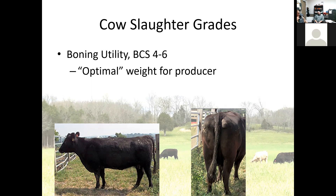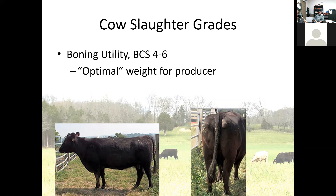This is where most cattle fall. These cattle used to have a slight discount to breaking cattle, but in 2019, 2018, and 2017, you'd actually see boning cows bringing a slight premium of one or two dollars per hundredweight over breaking cows. Last year they were running pretty much even with each other. There's no reason to feed them and put on gobs of fat when they're going to get the same price as a breaking animal.